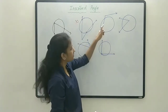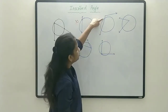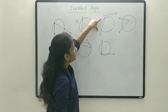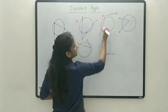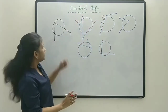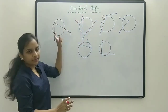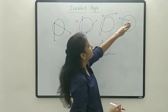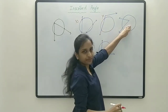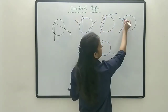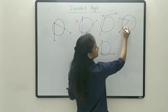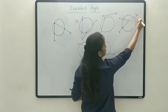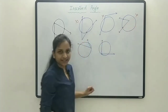In this example, there are only two common points, so this is not an inscribed angle — there should be three common points. Again, the vertex is outside. In this next example, there are two common points for the angle and the circle, so this is not an inscribed angle.